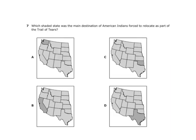Which shaded state was the main destination of American Indians forced to relocate as part of the Trail of Tears? That's Oklahoma Territory — Oklahoma today. At the time it was just territory. Indians were moved from the southeast up to Oklahoma Territory.